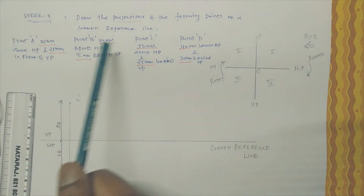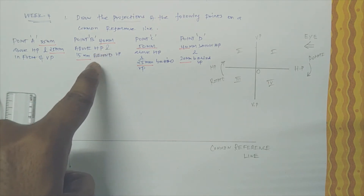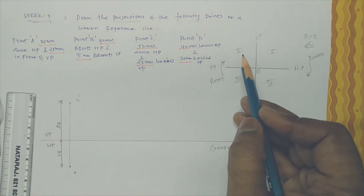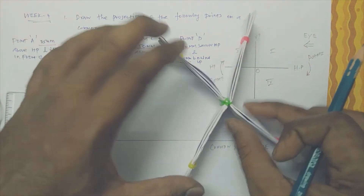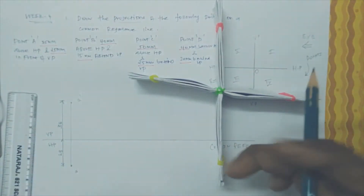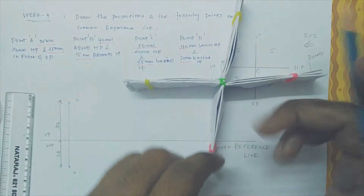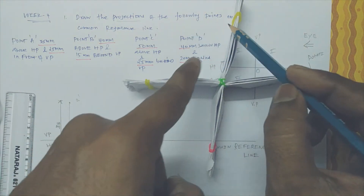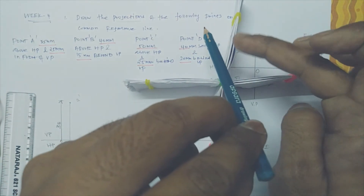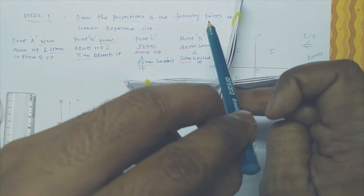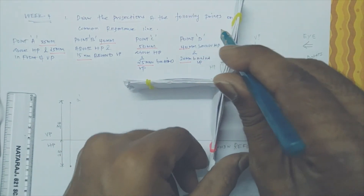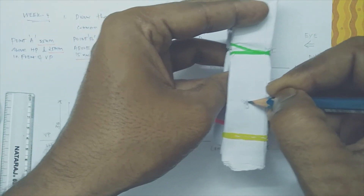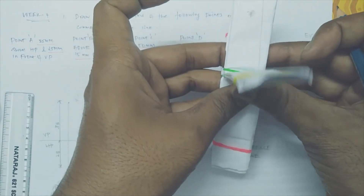Now for point B — they specify point B is 40mm above HP and 15mm behind VP. Above HP and behind VP means it will be in the second quadrant. The point B is 40mm above HP somewhere here and 15mm behind VP from here. If you consider this as a mirror or glass, you are looking from here and from the top. You may locate 40mm above and 15mm behind VP.